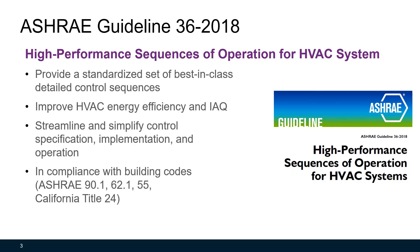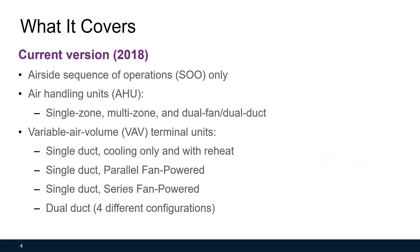The guideline is in compliance with building codes such as ASHRAE 90.1, 62.1, 55, and California Title 24. The current 2018 version only contains air-side sequences — no water-side sequences like chilled water plant control. It only applies to forced-air variable air volume (VAV) air handling units and VAV terminal units. There is no rooftop unit control, chilled beam systems, variable refrigerant flow (VRF), or dedicated outside air system (DOAS) controls.